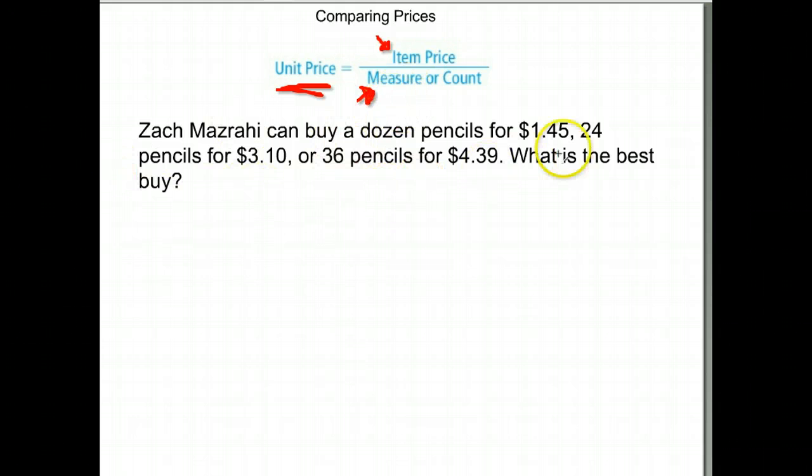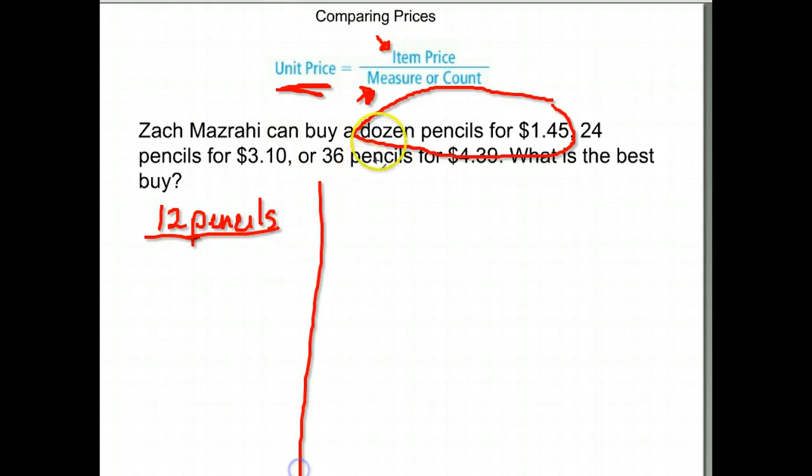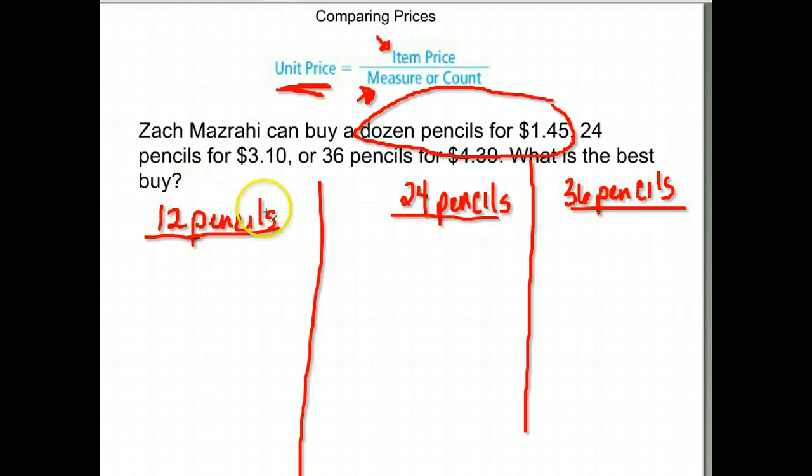For example, my first situation here, he could buy a dozen pencils for $1.45. A dozen is 12 pencils. I'll do my 12 pencils here. The next option was for 24 pencils. I'll do the 24 pencils here. And the final way that he could buy them was for 36 pencils.